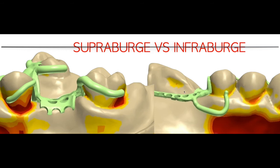There are many different supra-bulge clasp designs: Akers, ring clasp, and back-action clasp. Infra-bulge types include the I-bar, Y-bar, and T-bar. There are many different types, but the two major categories are supra-bulge and infra-bulge clasps. Remember: for Kennedy class 1 and 2, when choosing the direct retainer, you must consider a stress-releasing clasp.